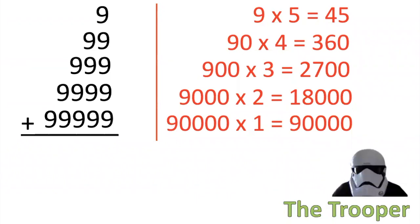I lined the nines up like my fellow troopers, then I counted all the nines up. There are five nines in the ones digit: nine times five equals forty-five. Four nines in the tens digit: ninety times four equals three sixty. Three nines in the hundreds digit: nine hundred times three equals twenty-seven hundred. Two nines in the thousands digit: nine thousand times two equals eighteen thousand.